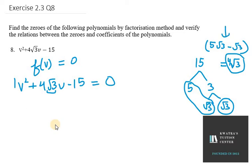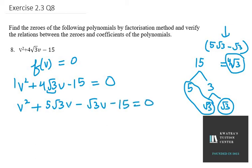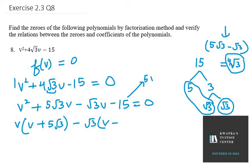So these are our factors — this is how we split the middle term. It can be written as v² + 5√3·v - √3·v - 15 = 0. Taking v common from the first two terms gives v(v + 5√3). For the last two terms, 15 = 5 × 3, so we can take √3 common: -√3(v + 5√3).